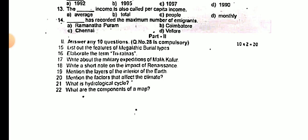2-mark questions: What is cytological cycle? What are the components of a map? Mention the factors that affect climate. Mention the layers of the interior of the earth. Write a short note on the impact of resilience. Give the operational definitions of demography. Mention the important functions of village panchayat. What are the benefits of wearing a helmet while driving? What are the indicators of development? What is meant by foreign exchange? Enlist the types of migration.